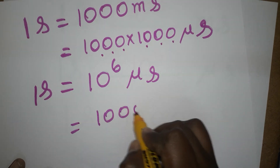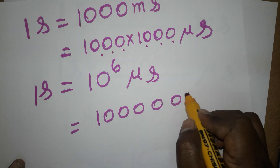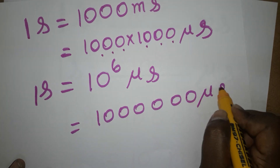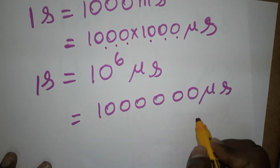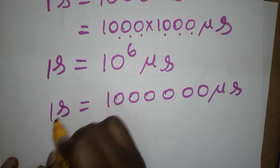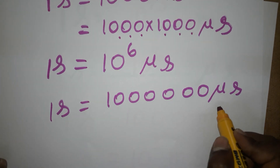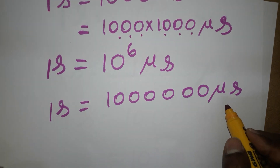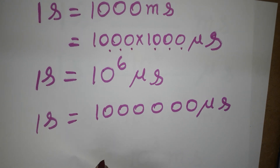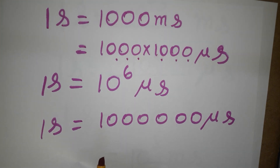One second is this much microseconds — 1 followed by six zeros — or 10 power 6 microseconds. It's a very small value. Thank you for watching.